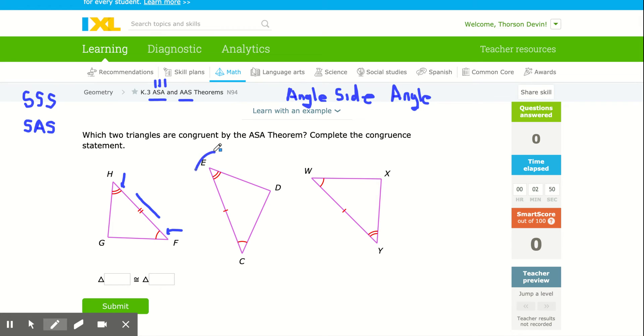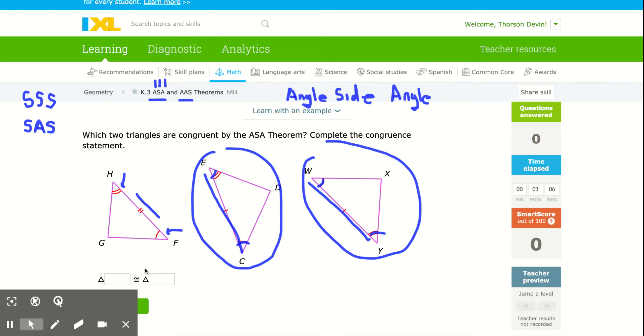So obviously this one here is going to be congruent to this one here because of angle, side, angle. And then remember that you always type the letters in the same order correspondingly, meaning if I do the EDC in the first triangle, EDC, I got to make sure I do the right letter that corresponds to E, which was the Y over here.